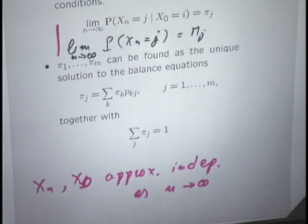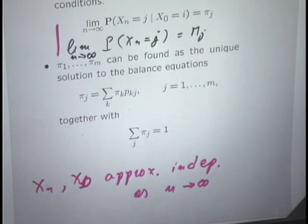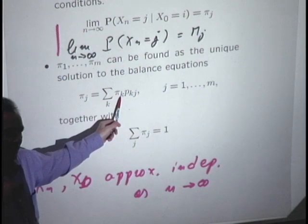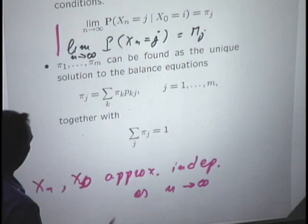The balance equations can be interpreted as conservation of probability flow — what comes in must get out. The probability of finding yourself at state j at a particular time is the total probability of the last transition taking you into state j. The last transition takes you into j in various ways: the previous time you were at some state k, and you made a transition from k into j. Adding over all k's, we consider transitions of all types that lead into state j.